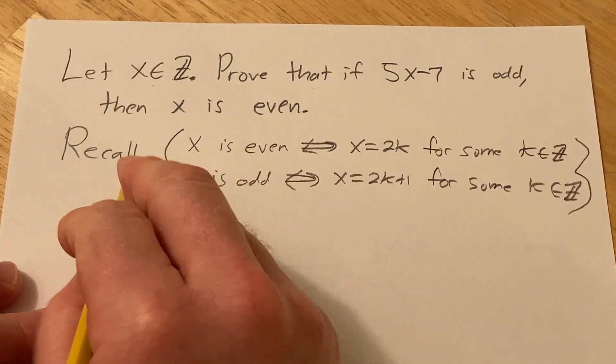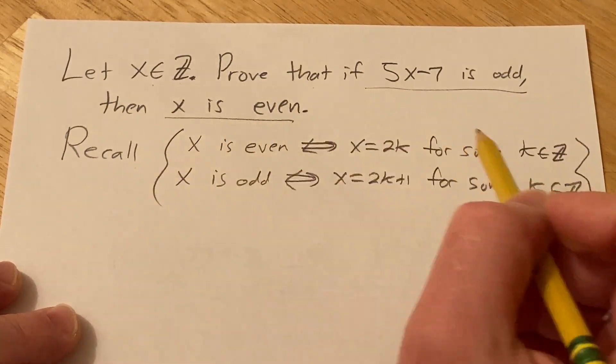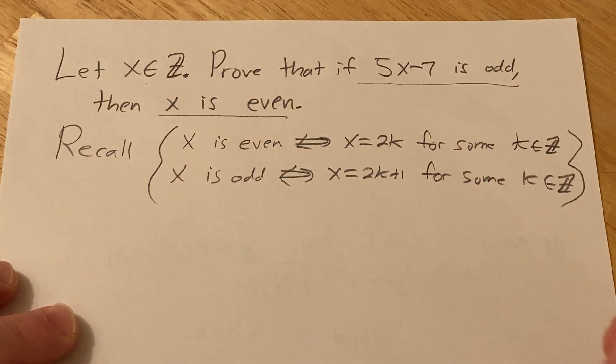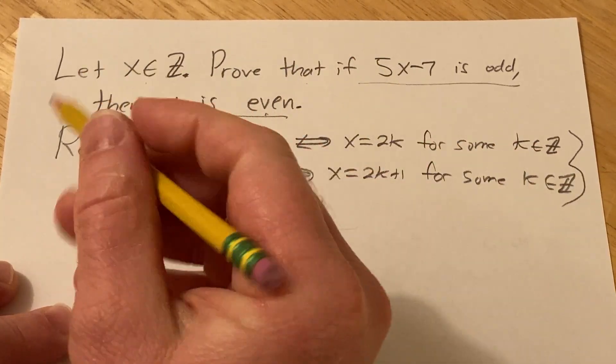Okay, so now we're ready to do the proof. So we have to prove that if this is true, then this is true. So I think it's going to be easier to prove the contrapositive, which basically means if this is not true, then this is not true. So let's do that.